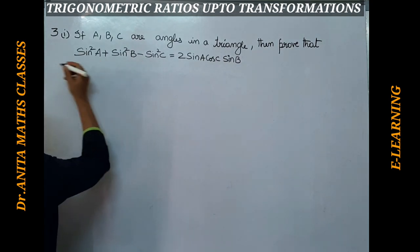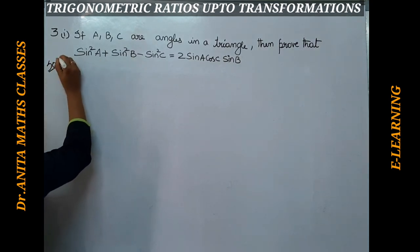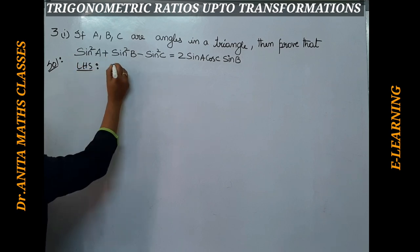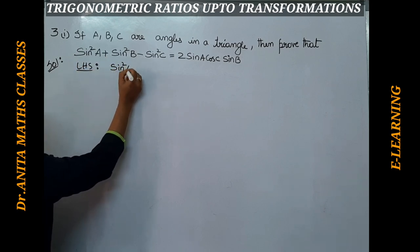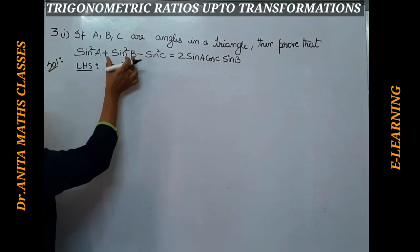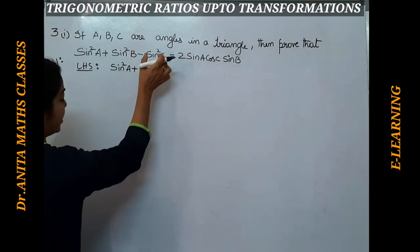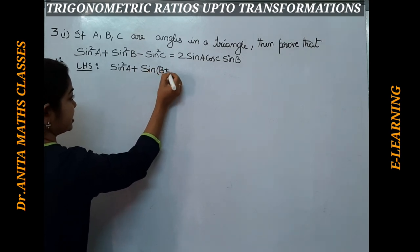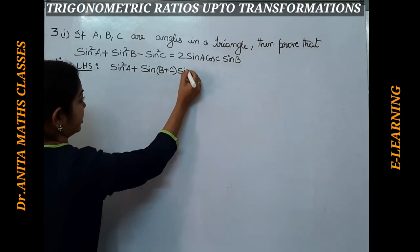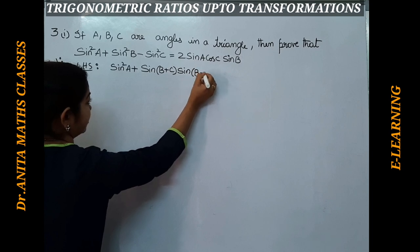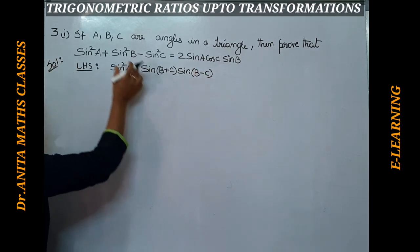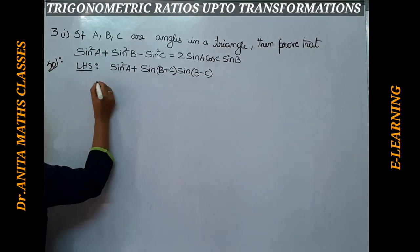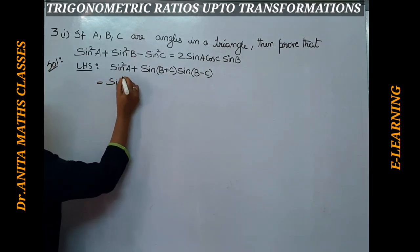We will start by taking the LHS. Here we have sin²a, and in place of sin²b - sin²c, I'll write it as sin(b+c) multiplied by sin(b-c), using the product-to-sum identity. So this equals sin²a + sin(b+c)·sin(b-c).